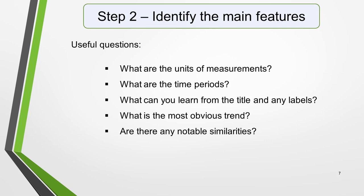Use the information in the graphic to help you identify the main features, and here are some useful questions you can ask: What are the units of measurement? What are the time periods? What can you learn from the title and any labels? What is the most obvious trend? And are there any notable similarities? I give more detail on how to use these questions, plus downloadable checklists for identifying the main features of all seven different types of academic task 1 questions, in the lesson on how to understand and analyze task 1 questions.